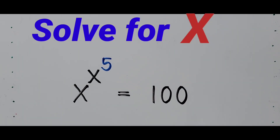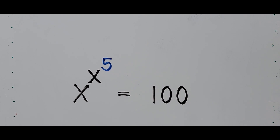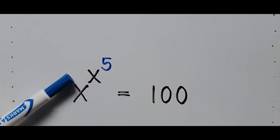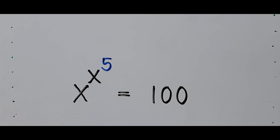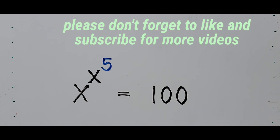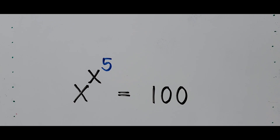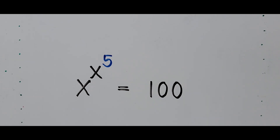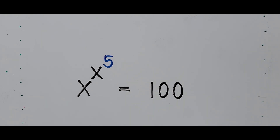Hello everyone, welcome to Casiano Easy Math. We have here another exponential equation: x to the power of x to the power of 5 equals 100, and we're going to find the value of x. For those new to my channel and those who have not subscribed, please don't forget to like and subscribe for more videos. Now let's start solving.